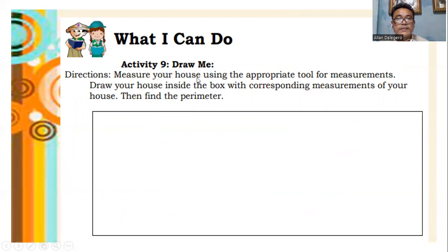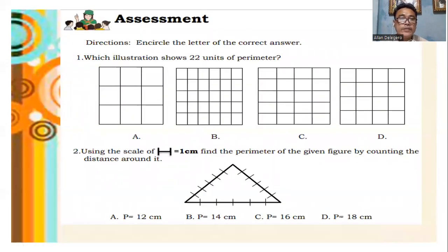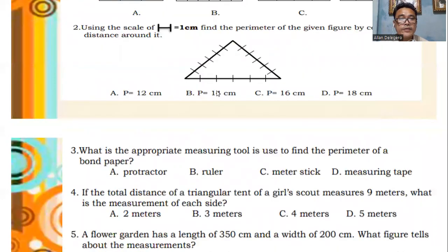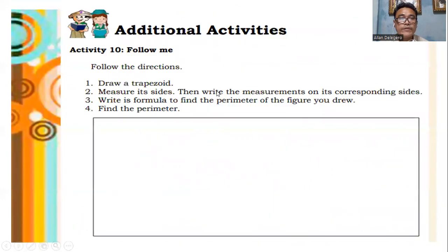Activity 9: measure your house — using the appropriate tool for measurements, draw a house and write the measurements in centimeters, then find the perimeter. For your quiz, we have 10 items — encircle the letter of the correct answer. For additional activities: number 1, draw a trapezoid; number 2, measure its sides and write the measurements on the corresponding sides; number 3, write the formula to find the perimeter and solve.